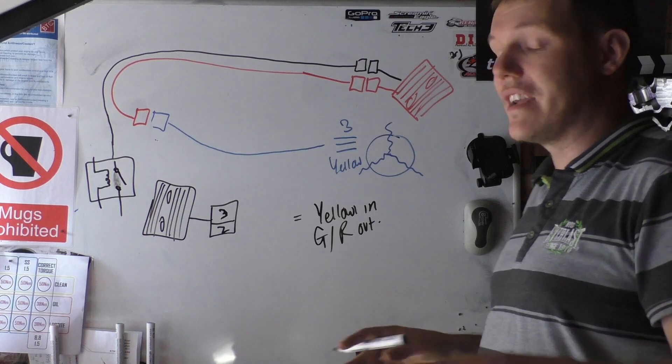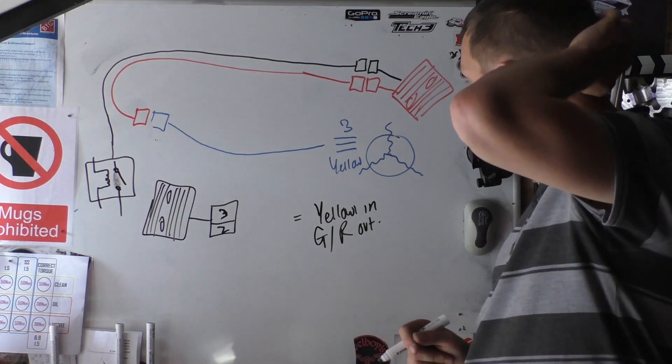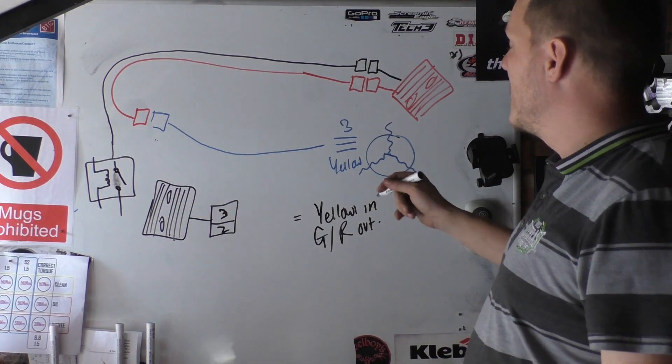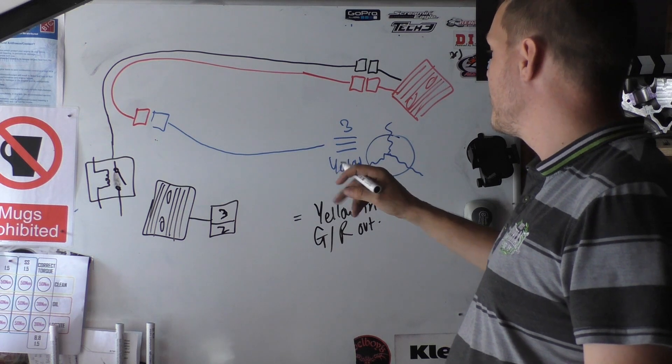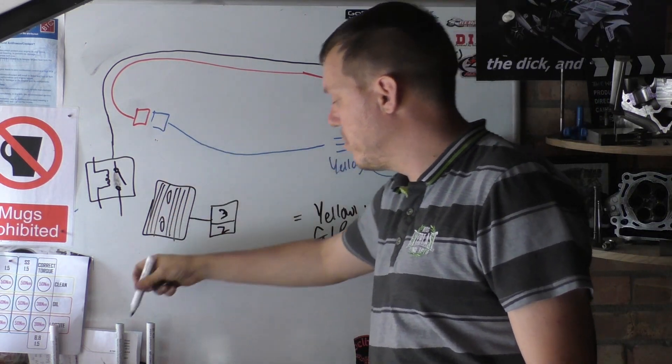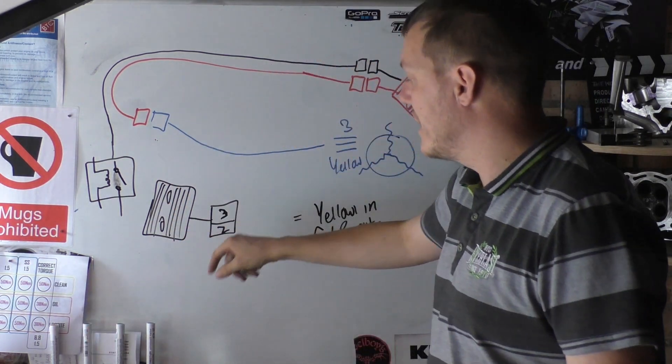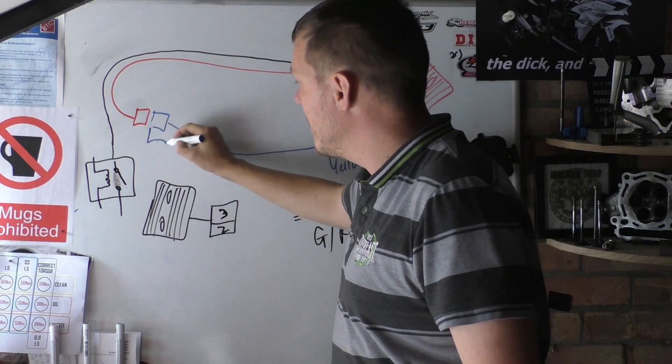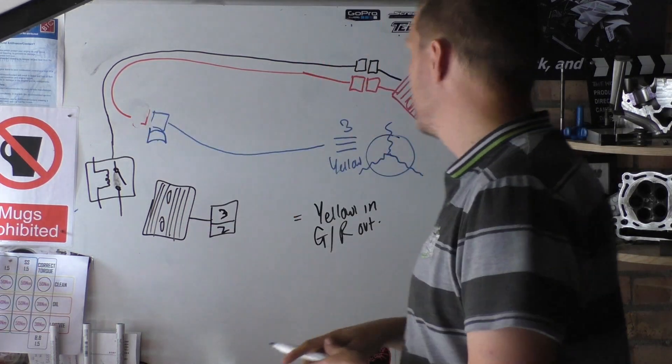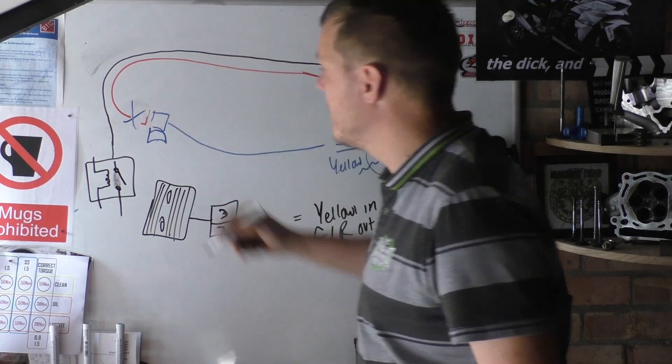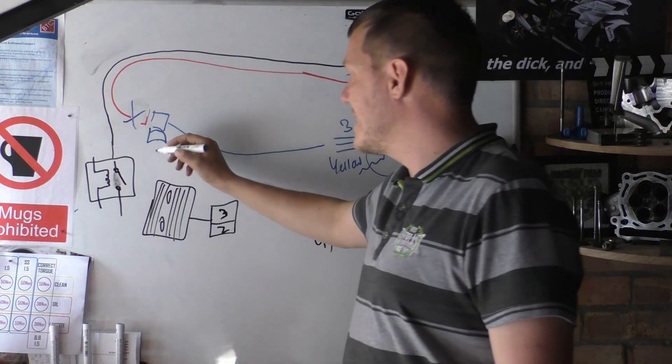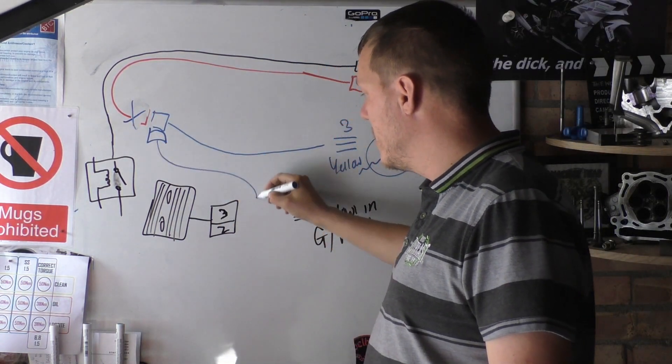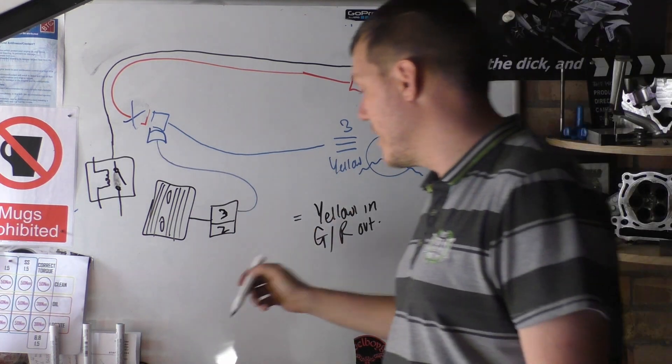So basically what we need to do is, the coil comes up, we want to plug the coil into this. So we will get rid of this connector, just cross it off, get rid of that connector, have a connector here coming out of the loom and going into that three pin section there. Great.